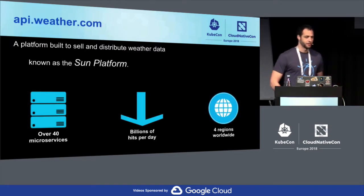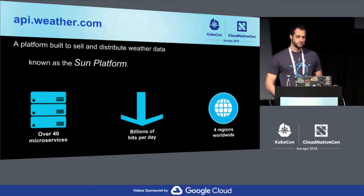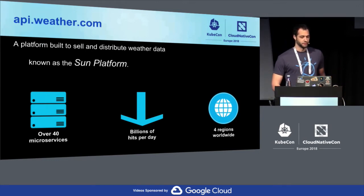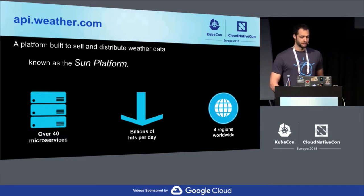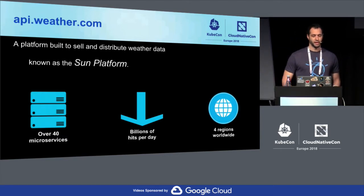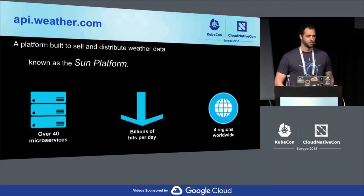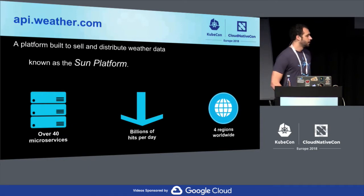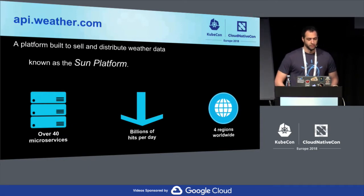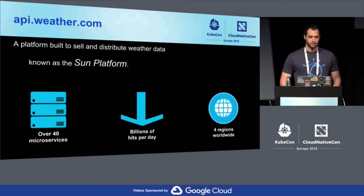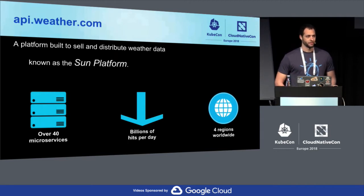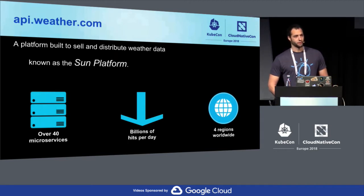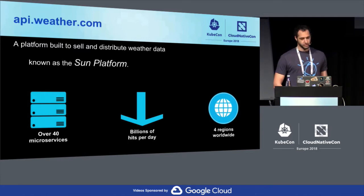Today we want to talk about api.weather.com. This is the main way that we sell and distribute weather data. We built a platform around this known as the Sun Platform. We are currently home to over 40 microservices that serve weather data. We do billions of hits per day and we operate worldwide, mainly in four regions.